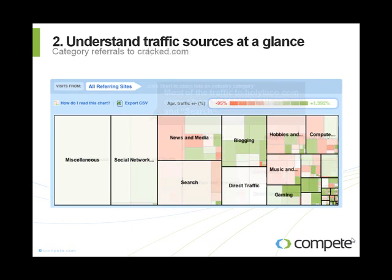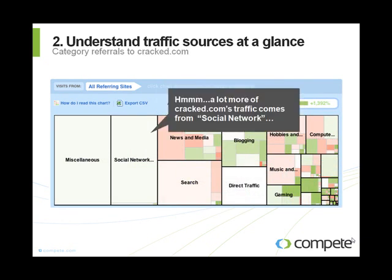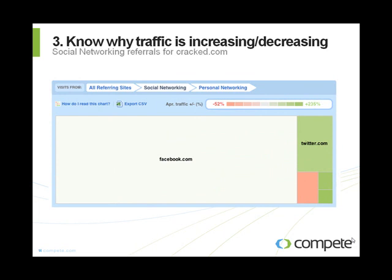On the other hand, when I go and run the same report on my competitor, something really jumps out at me. A lot of traffic is coming from the social networking category, which was much smaller when looking at my own referral patterns. If I drill down into that category — looking at the individual sites that make up the social referrals — I can see that by far the majority of them come from Facebook. I also see a lot of strong growth in Twitter. When you see a green square, it means that month-over-month growth is large; when you see a red square, it means month-over-month growth is negative.